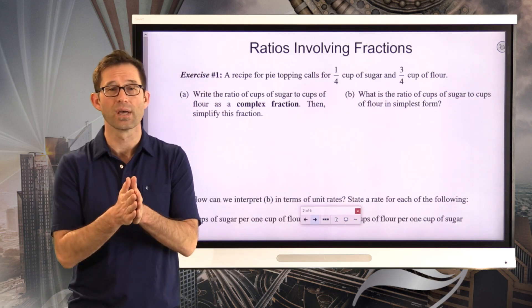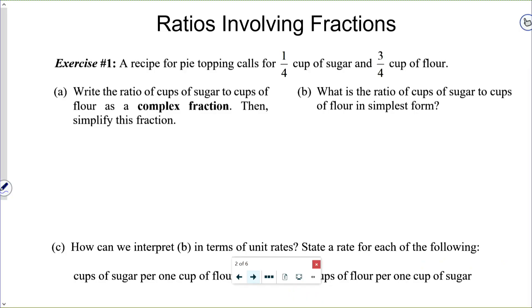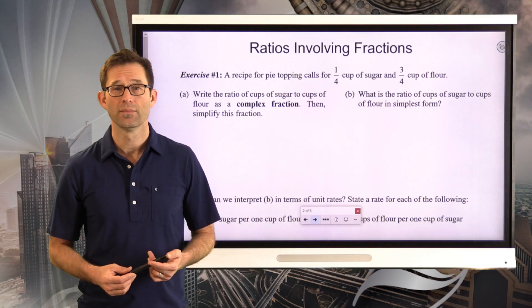Ratios involving fractions, exercise number one. A recipe for pie topping calls for one-quarter cup sugar and three-quarters of a cup of flour. Letter A says, write the ratio of cups of sugar to cups of flour as a complex fraction. Then simplify this fraction.